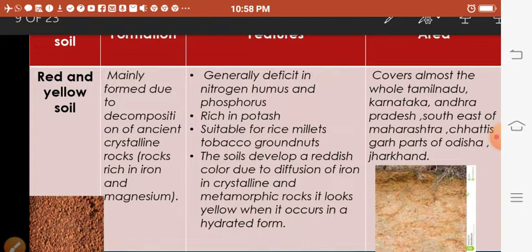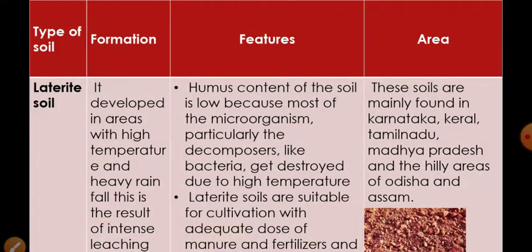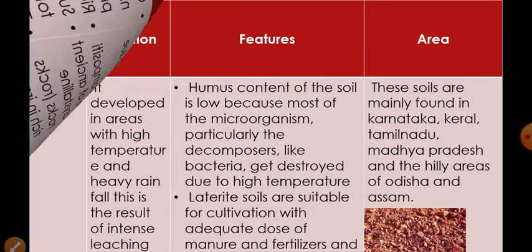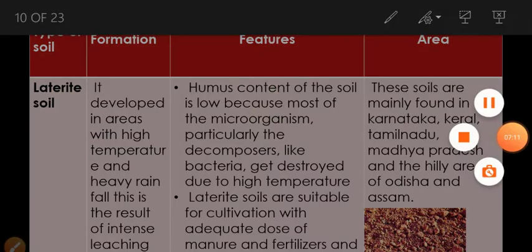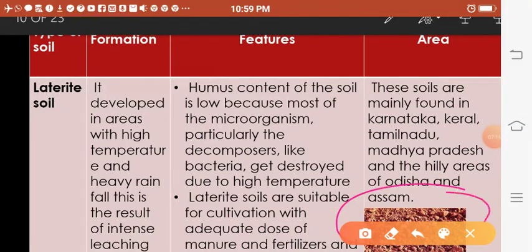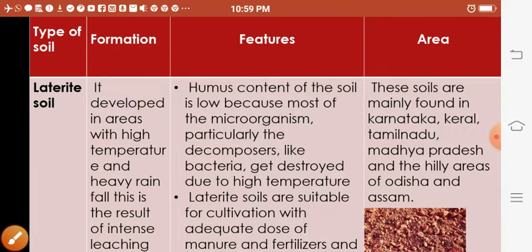The next soil is laterite soil, which is completely hopeless in terms of cultivation and irrigation. It develops in areas with high temperature and heavy rainfall due to intense leaching. If you look at these pictures, you can easily find what kind of soil laterite could be. The humus content is low because most microorganisms, particularly decomposers like bacteria, get destroyed due to high temperature. However, laterite soil is suitable for cultivation with adequate doses of manure and fertilizers.